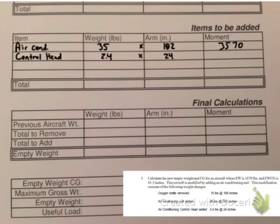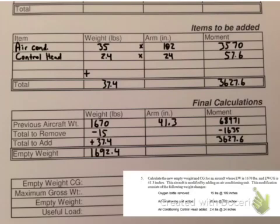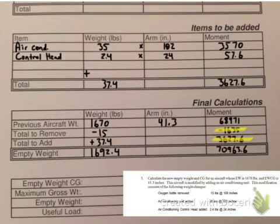Add the weights and moments separately for the items being added. We get a total added weight of 37.4 pounds plus the additional moment. In the next section, write in the original numbers, then subtract the 15 pounds removed and add the 37.4 pounds to get the new empty weight. Use the arm for the previous weight, multiply it out to get the moment. The moment to remove comes from the totals higher on the sheet, and the moment to add comes from the items-to-be-added section. Add and subtract those respectively to get a new total moment.